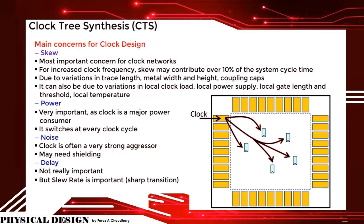Skew is the most important concern for the clock network. For increased clock frequency, skew may contribute over 10% of the system cycle time, due to variations in trace length, metal width and height, and coupling caps. It can also be due to variations in local clock load, local power supply, local gate length, threshold, and local temperature. Power is very important as clock is a major power consumer — it switches at every clock cycle. Noise: clock is often a very strong aggressor and may need shielding. Delay is not really important, but slew rate is important because of sharp transitions.